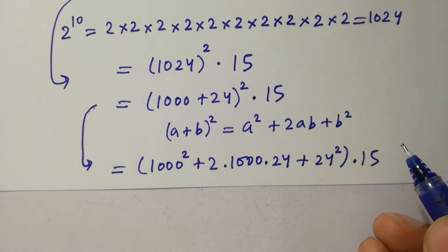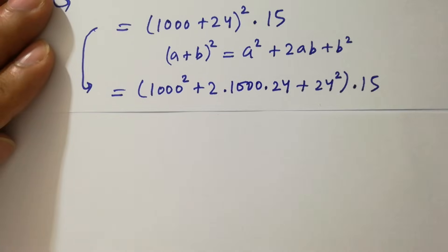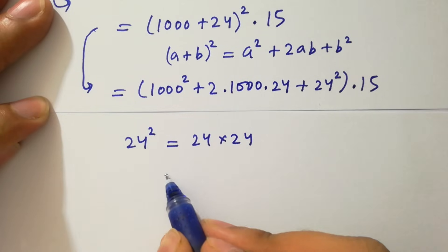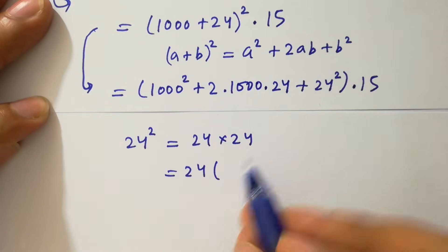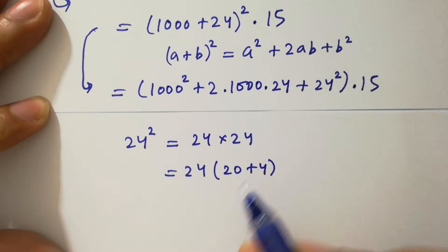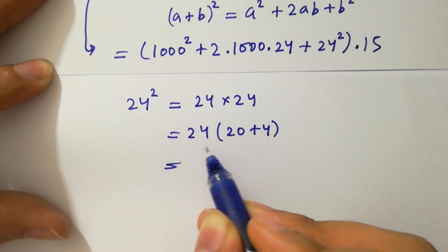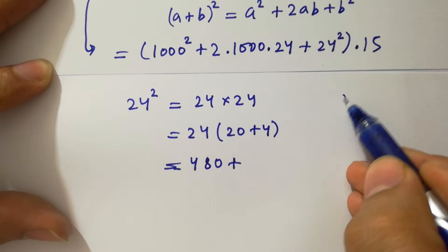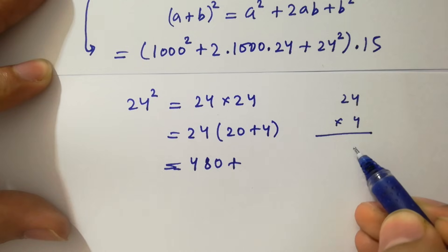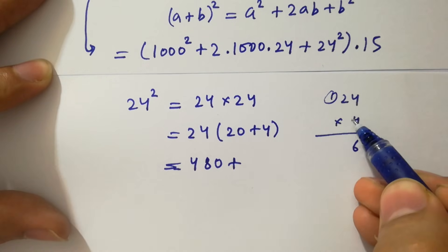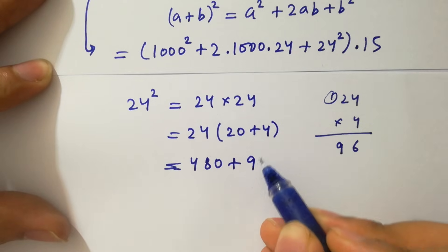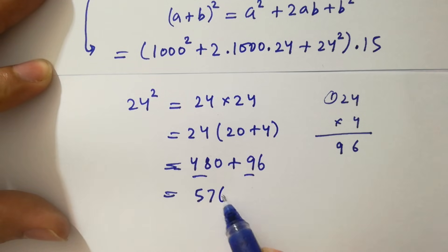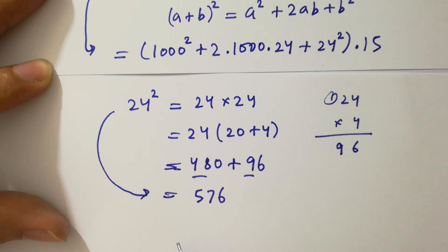Now let's compute 24 squared, which is 24 times 24. Since 24 is the same as 20 plus 4: 24 times 20 gives 480, and 24 times 4 — 4 times 4 is 16, write 6 carry 1; 4 times 2 is 8, plus 1 is 9, giving 96. So 480 plus 96: 0 plus 6 is 6, 8 plus 9 is 17... 24 squared equals 576.